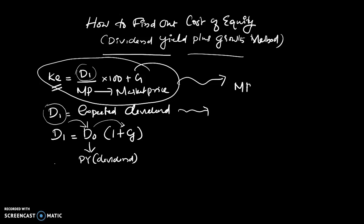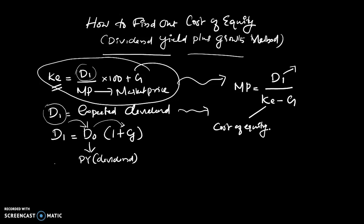Market price — if you have new information on market price, you can make use of this equation: market price is equal to D1 divided by KE minus growth. So we already defined D1. From this, you can calculate cost of equity, given D1, market price, and growth rate.